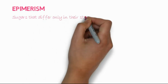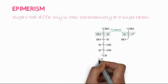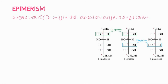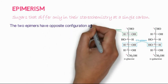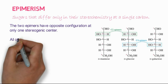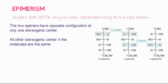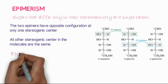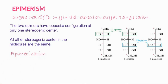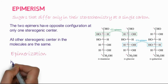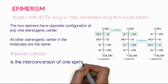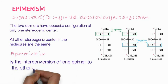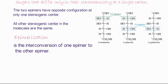The next class is epimerism — sugars that differ only in the stereochemistry of a single carbon. For example, the difference in orientation at positions two and four of glucose. The two epimers have opposite configuration at only one stereogenic center; all other stereogenic centers in the molecule are the same. Epimerization is the process of interconversion from one epimer to another — for example, glucose is converted to either mannose or galactose.